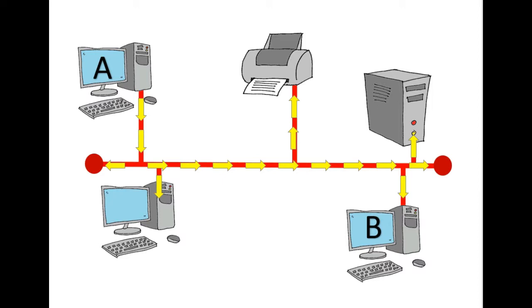This means that every single node on the network would also receive the message. However, they would ignore the message if it's not for them. It's only computer B that would actually read and process that message.